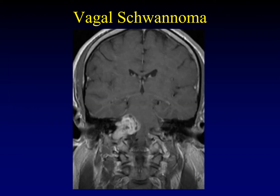Here's another example of a schwannoma enlarging the jugular bulb with a nice smooth margin against the underlying bone and no erosions, though it's easier to see on CT. This tumor has the heterogeneous enhancement pattern expected for schwannoma. It runs from the lateral medullary cistern down through the jugular bulb along the course of the vagus nerve. Vagal schwannomas can occur anywhere along the vagus nerve beyond its transition point to Schwann cell myelination.